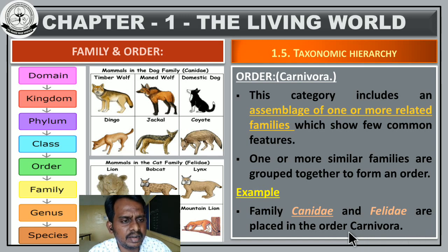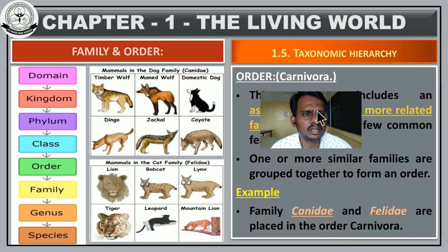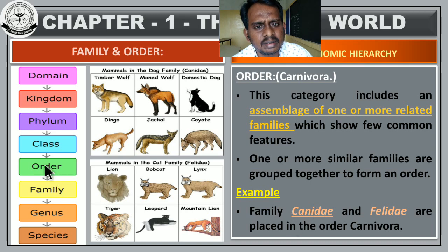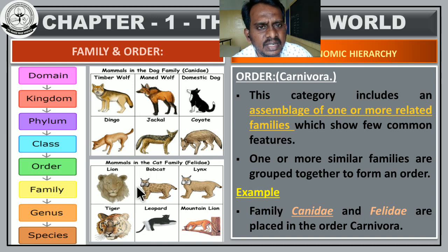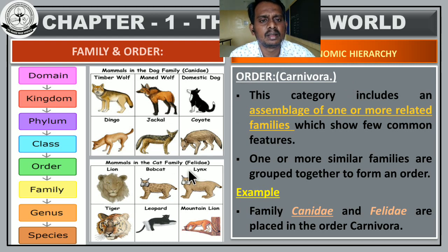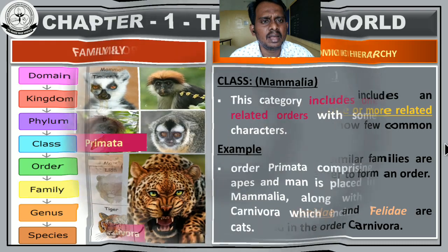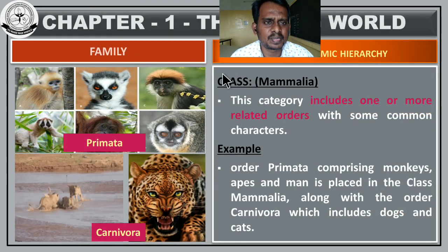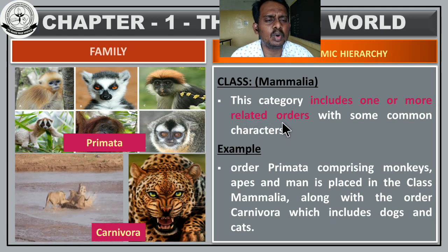The order Carnivora includes two families: Canidae and Felidae. Canidae and Felidae are grouped under the same order Carnivora because the members of both families eat flesh. Order means a group of families with common features.